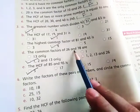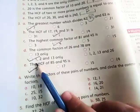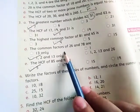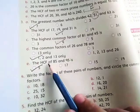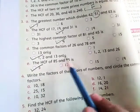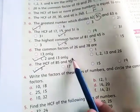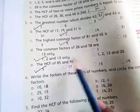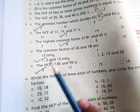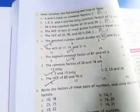The common factors of 26 and 78 are 1, 2, and 13. The highest common factor of 85 and 95 is 5. You have to take the factors so you can get the highest common factor or common factors.